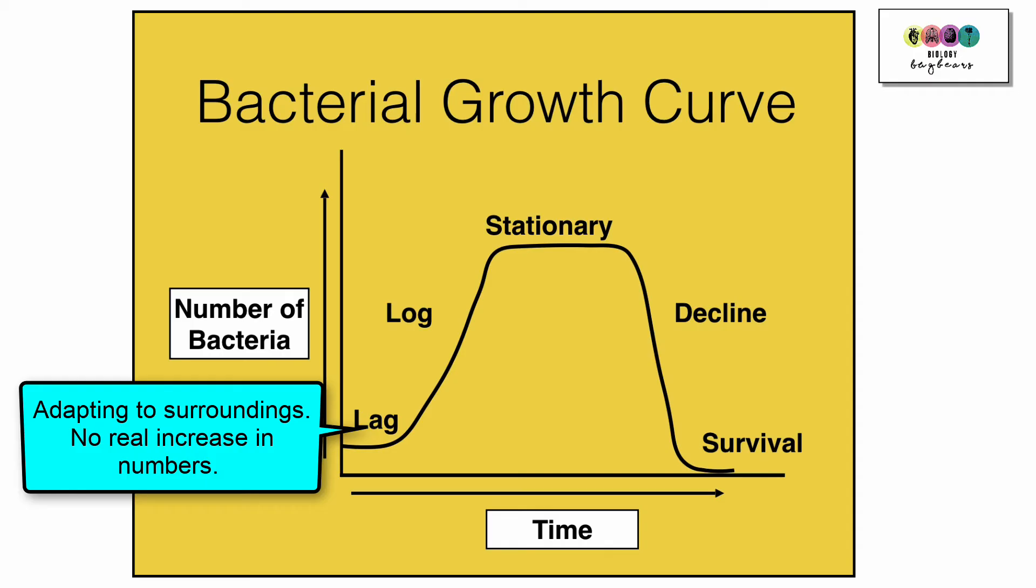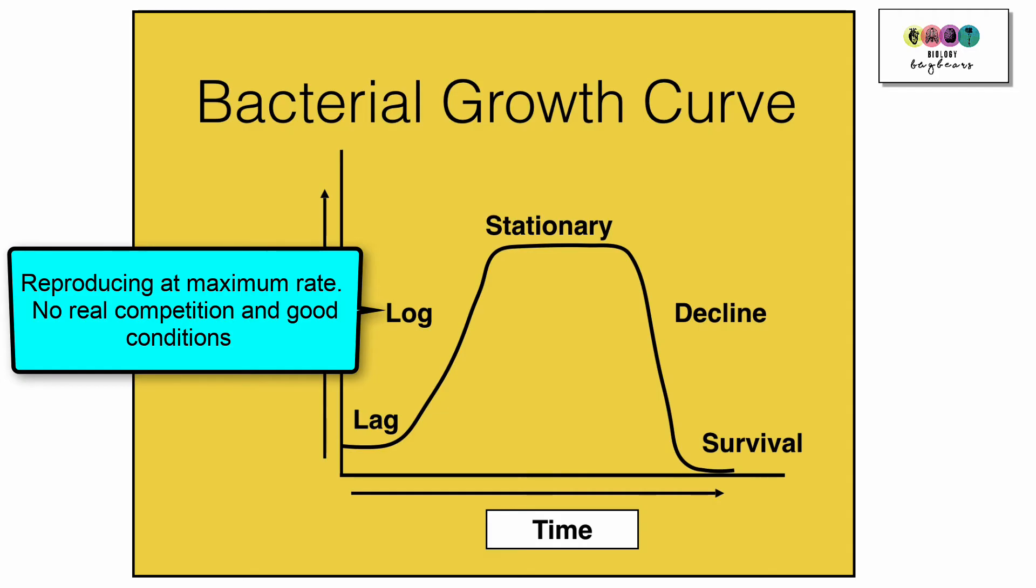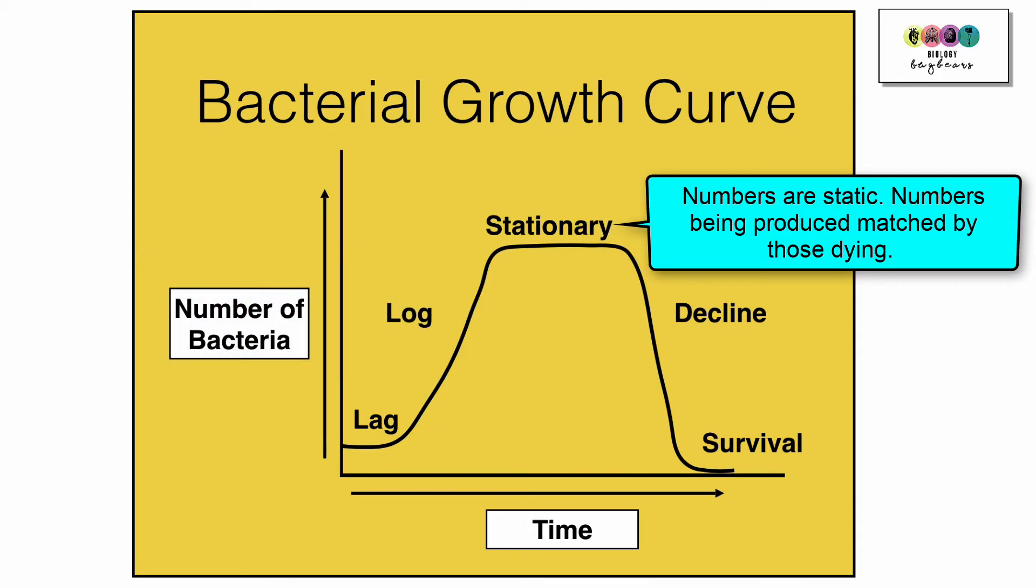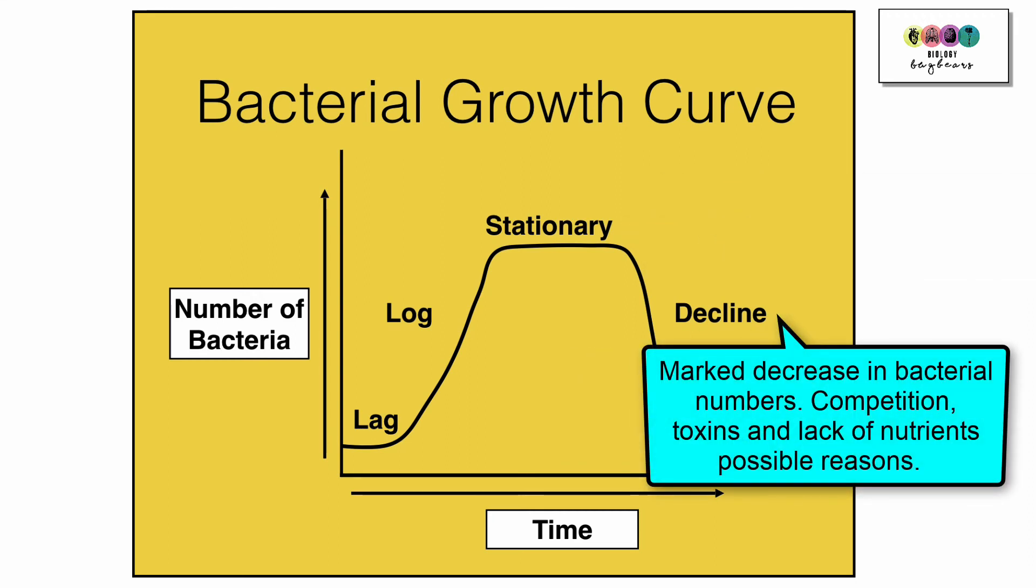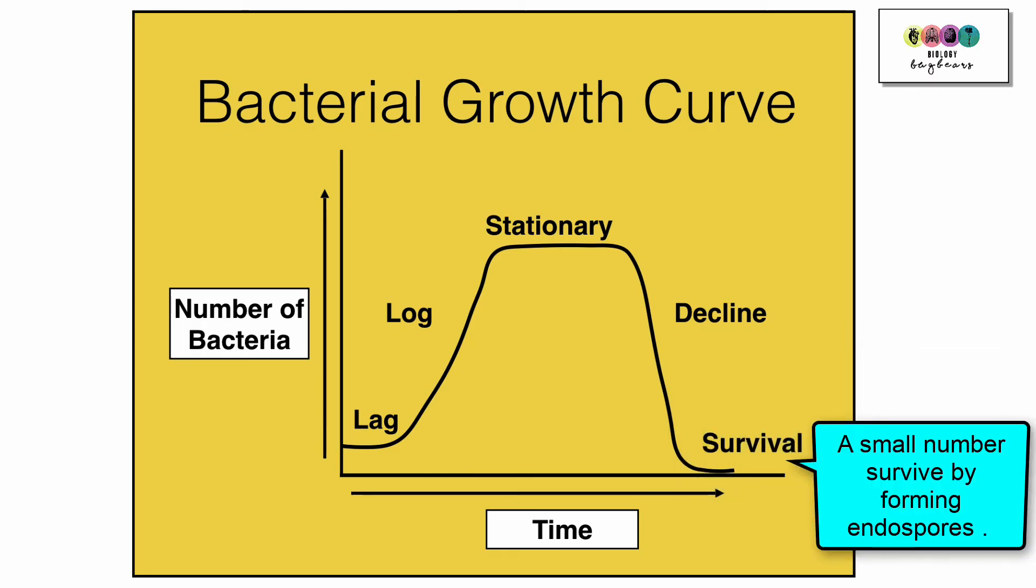So we commence the graph with the lag stage. This is where there are no real increase in numbers because the bacteria are adapting to their surroundings. Then we have the log stage and this is where the bacteria are reproducing at their maximum rate. There's no real competition and there's very good or optimal conditions. Next we have the stationary phase and this is where the numbers don't increase or decrease. They're pretty much static and this is because the numbers being produced are matched by those dying off and at this stage you're starting to see more competition and toxins building up. Then we have the decline phase. This is where there's a marked decrease in bacterial numbers so competition, build-up of toxins and lack of nutrients are possible reasons for this. Finally, we have the survival stage and this is where a small number will survive by forming endospores.